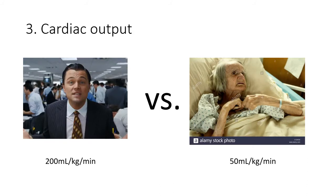Thirdly, the disparity in offset times between these two drugs is highly dependent upon the patient's cardiac output, or in truth the rate of blood flow through the tissue compartments. In general, there is much less to be gained by using desflurane in an older and frailer patient as compared with the younger and more vigorous patient, assuming that we administer a MAC fraction appropriate for each group.